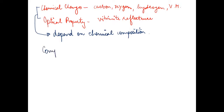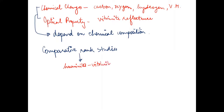When we say rank — lignite, sub-bituminous, bituminous — these are all ranks. Comparative rank studies are not carried on all types of macerals or constituents. Rather, they are carried on the huminites, vitrinites, or concentrates of these macerals. These are all macerals: huminites, vitrinites. We study mostly the huminite and vitrinite groups or their concentrates.